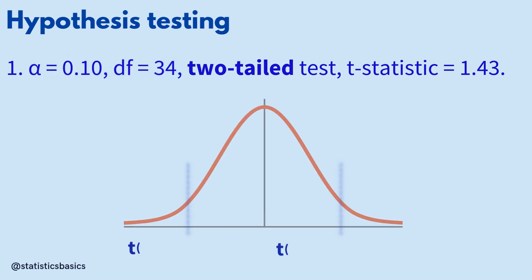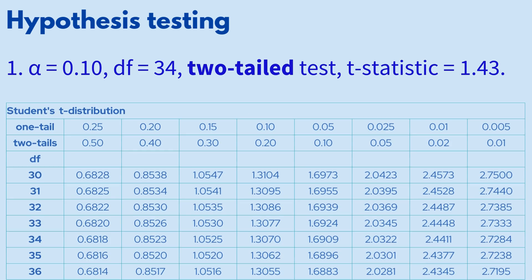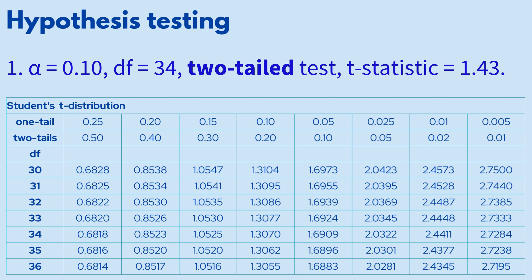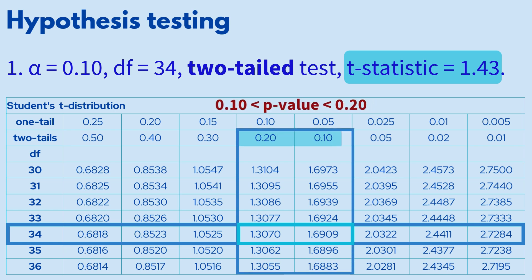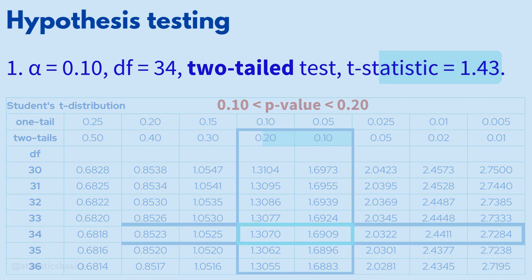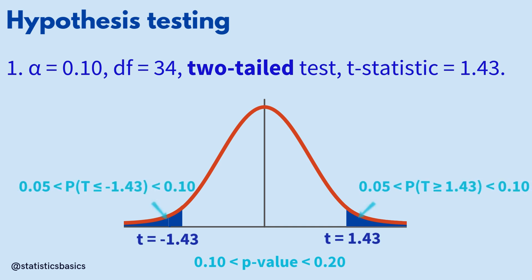Since this is a two-tailed test, the lower critical value is minus 1.6909 and the upper critical value is 1.6909. To find the p-value, locate the row corresponding to 34 degrees of freedom, then identify the columns within which the test statistic of 1.43 falls. The corresponding column headings provide the range of the p-value. For this two-tailed test, the p-value lies between 0.10 and 0.20, with each tail contributing between 0.05 and 0.10.